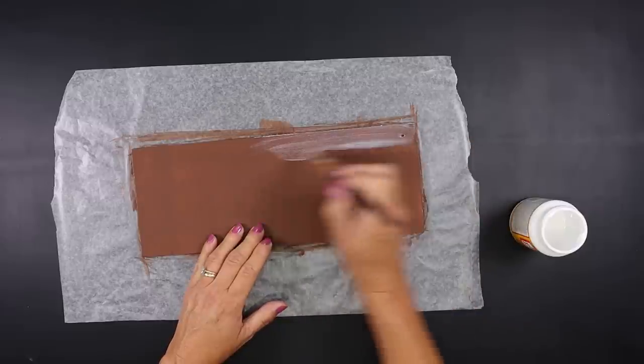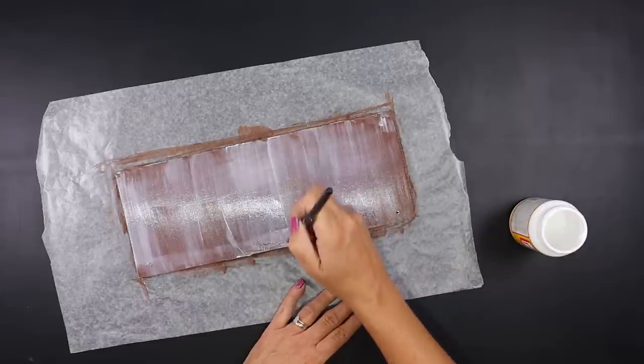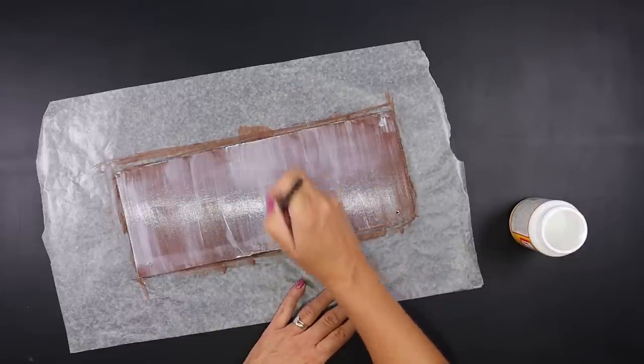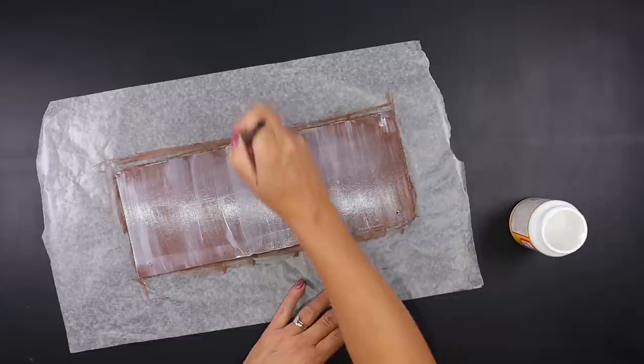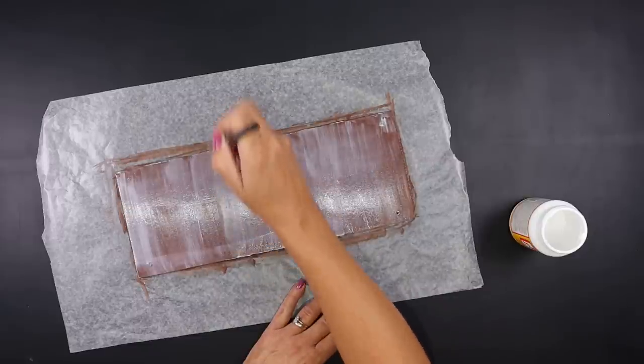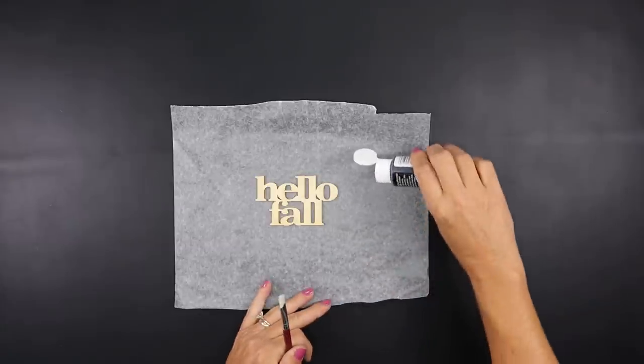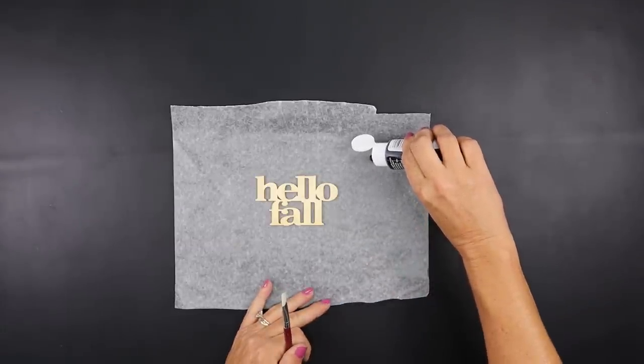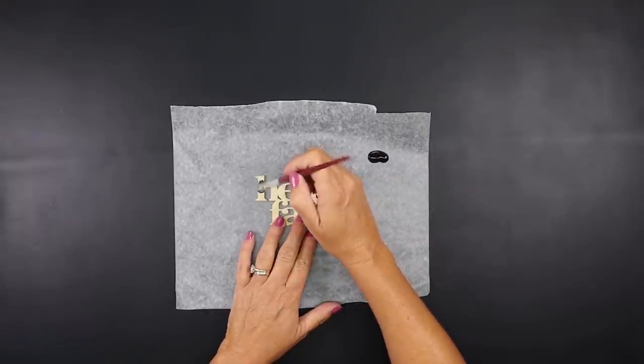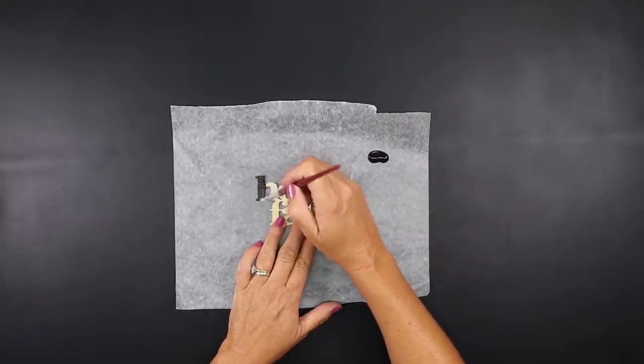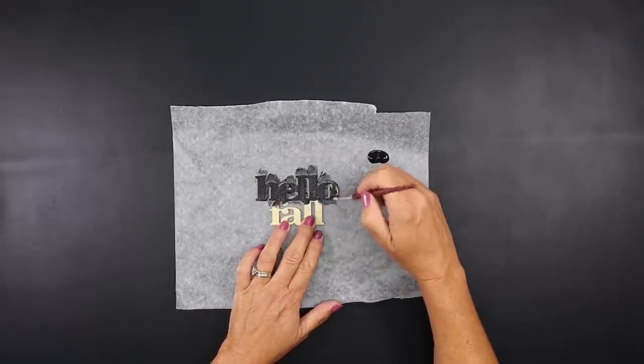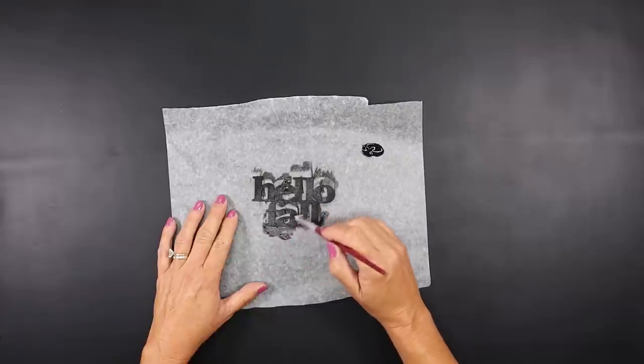You only need to do this to the bottom half but I wanted mine to have the same sheen so I went over the entire sign with the Mod Podge. Let that dry. I'm also using one of Dollar Tree's fall wooden cutouts. They have several different sayings in it. This one says hello fall and I'm going to give that one coat of black acrylic paint.